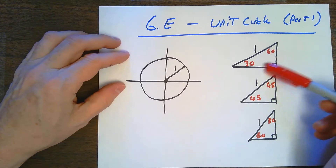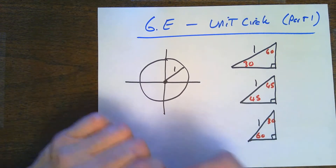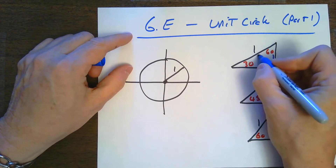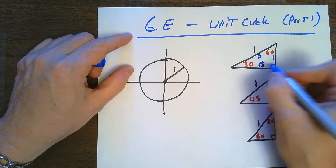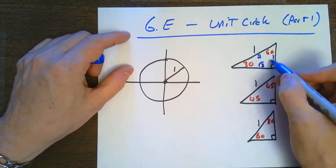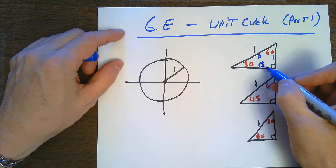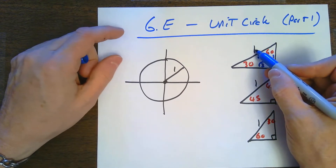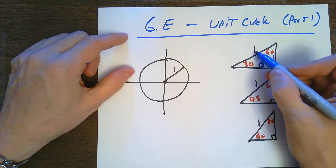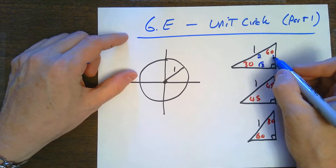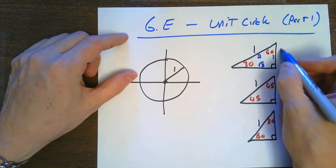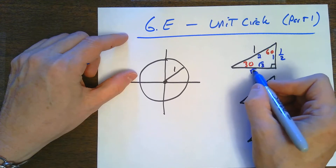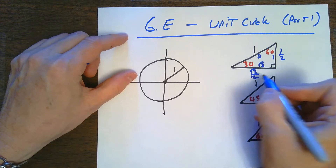In the 30-60-90 triangle, the sides have ratios of 1, 2, and √3. But I want the hypotenuse to be 1, not 2. So I divide everything by 2: two divided by two is one, one divided by two is one-half, and √3 divided by two is √3 over 2.